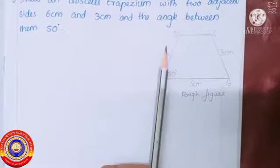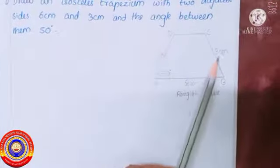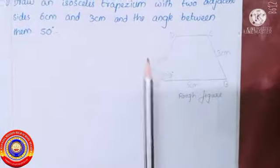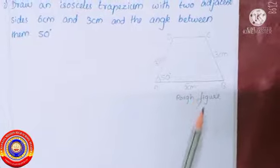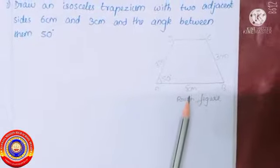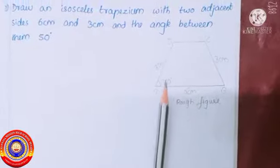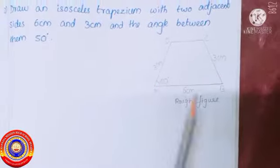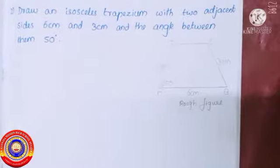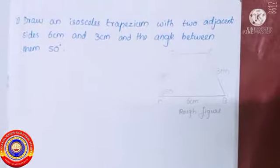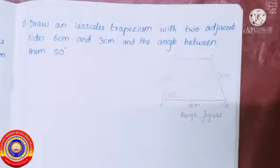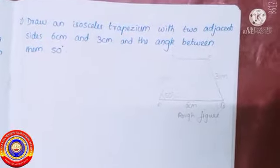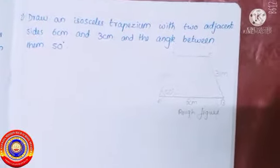First of all, let's draw a rough figure. In this question, two adjacent sides' lengths are given — that is six centimeter and three centimeter — and the angle between them is given as 50 degrees. Using this, we can draw the figure.